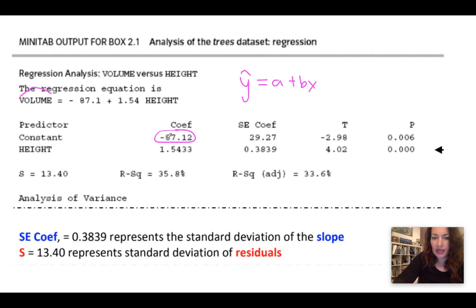In this case, negative 87.12 is our y-intercept, also known as our a. Our slope is always underneath the constant. We can see that the explanatory variable in this case is height, and right underneath the coefficient, underneath your a value, will be your slope. So our b-value is 1.5433. Normally, you would need to identify those and then plug it into the equation. But in this case, they wrote it for you right here.